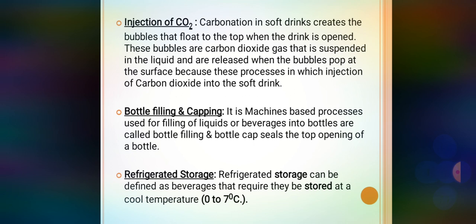Carbonation creates the bubbles that float to the top when a soft drink is opened. These bubbles are carbon dioxide gas suspended in liquid, released when the bubbles pop at the surface. This process of injecting carbon dioxide into a soft drink is called carbonation. The equipment used for this is called a carbonator, through which CO2 gas is injected into the liquid.